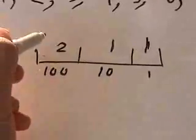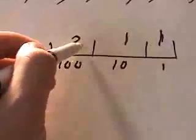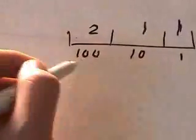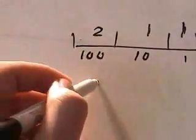So, what you actually have to do is say: okay, so we have 2 in the 100 place value, so we have...